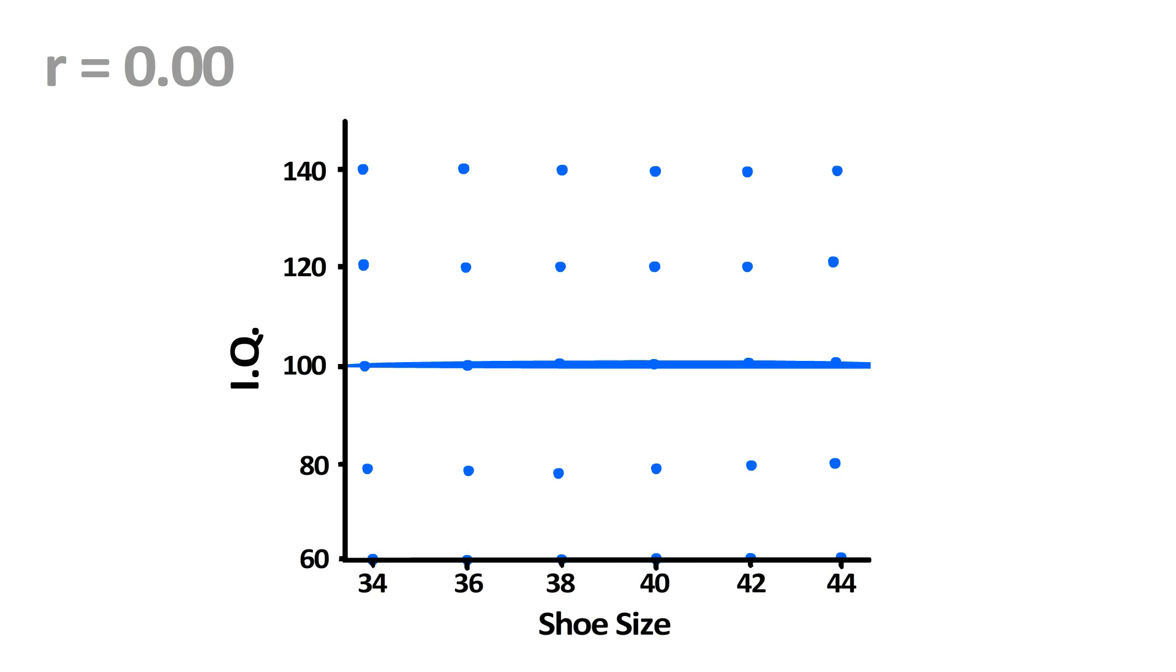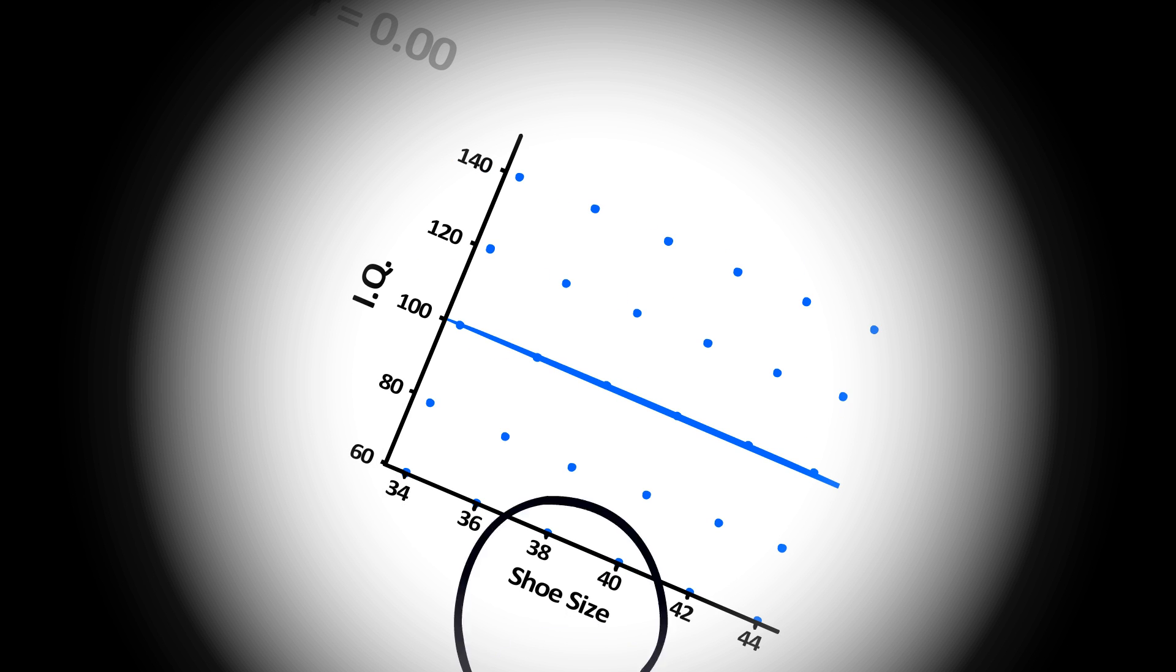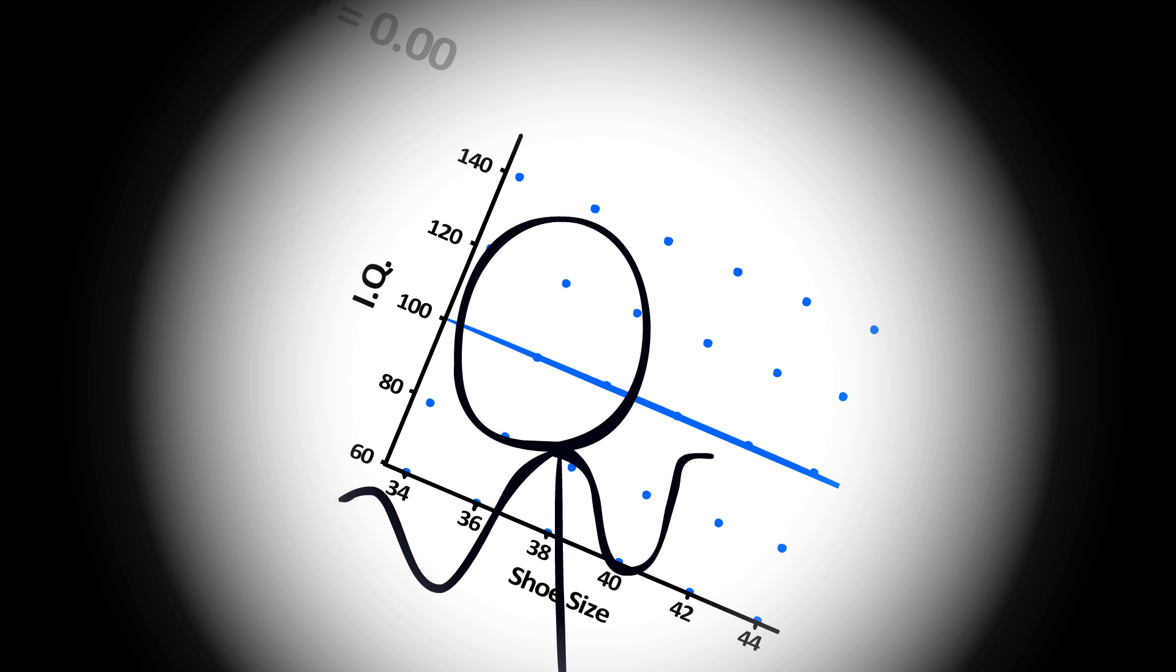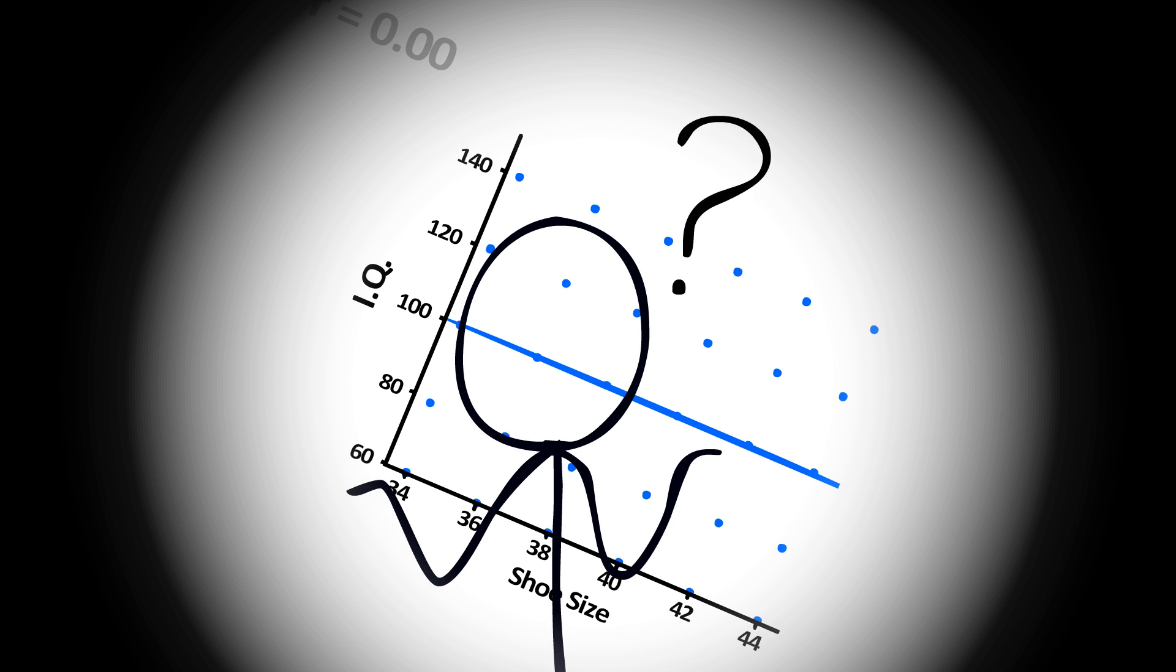A correlation of zero would look like this. As you can see, in this dataset, there is no relationship whatsoever between an individual's shoe size and their IQ. Please don't take this data seriously, I made it up. I'm unaware of what the actual correlation is between shoe size and IQ.